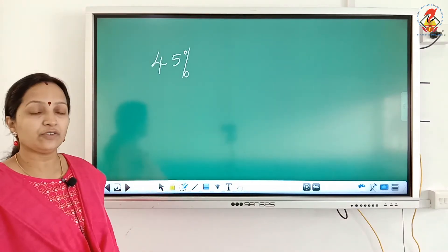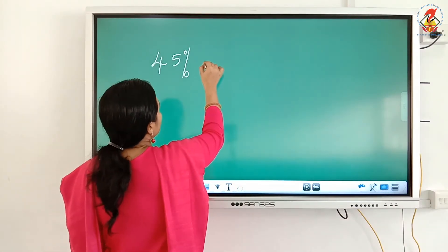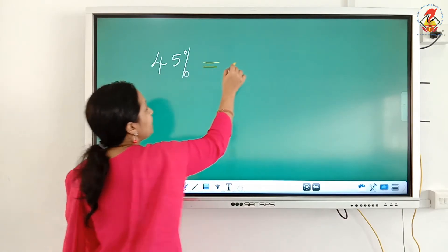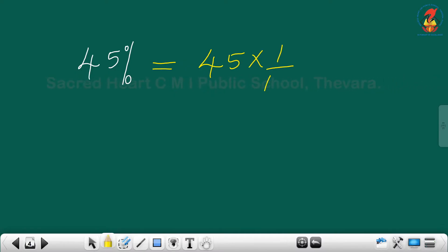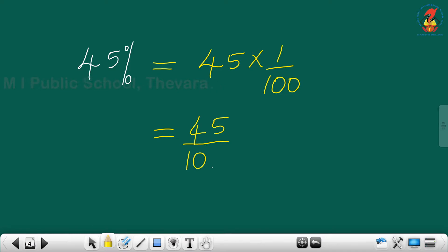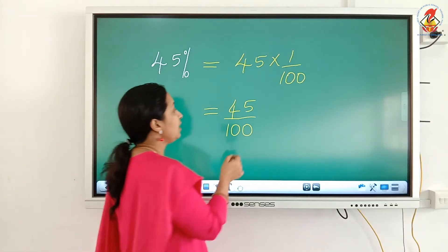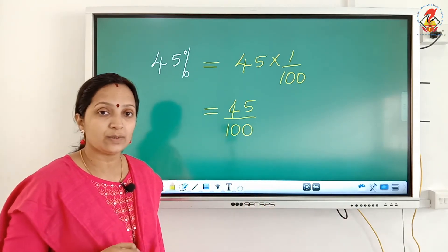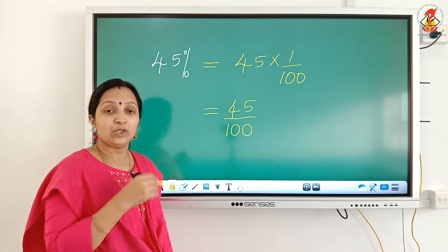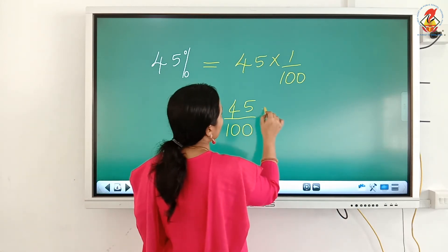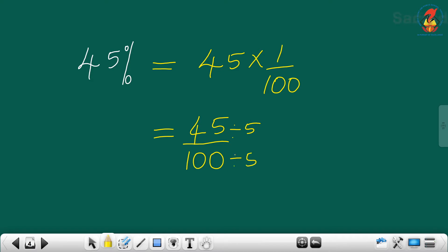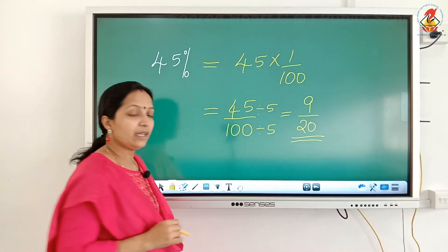Look at the first question: 45 percent. Our rule is to drop the percentage sign and multiply by 1 by 100, which gives us 45 by 100. Simplify means find the lowest term. The HCF of 45 and 100 is 5. Divide the numerator and denominator by 5 and you get the answer 9 by 20.